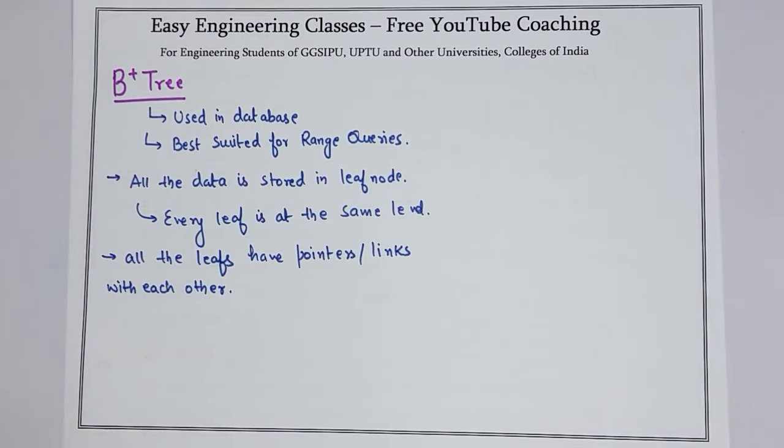The data is stored on leaf node only. And the root can have 2 to m number of children. This is one of the assumptions that we take in the B plus tree.